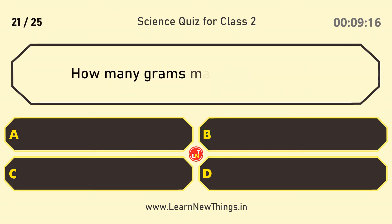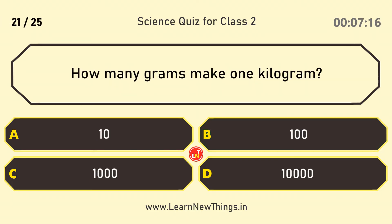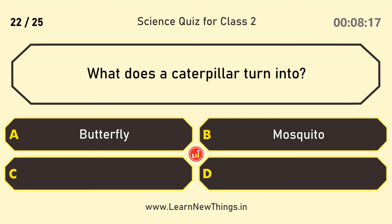How many grams make one kilogram? 1,000. What does a caterpillar turn into? Butterfly.